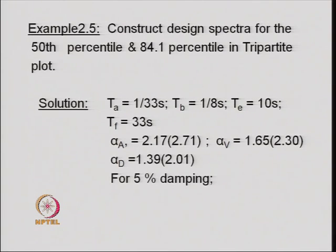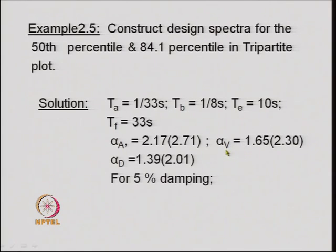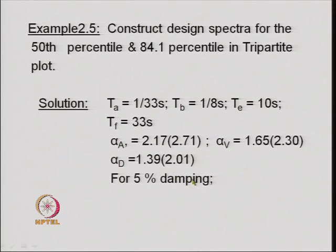A design spectrum can be obtained for the 50th percentile and 84.1 percentile on a tripartite plot. The 50th percentile corresponds to the design spectrum, while 84.1 percentile — the mean plus one standard deviation — is taken as the response spectrum for the extreme earthquake. For a construction example, T_A was 1/33 second, T_B was 1/8 second, T_E was 10 seconds, and T_F was 33 seconds. The alpha_a was 2.17, alpha_v was 1.65, and alpha_d was 1.39 (values in brackets for 84.1 percentile; the others for 50th percentile), with 5% damping.